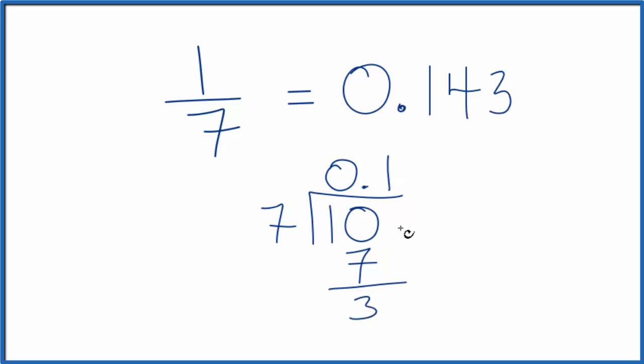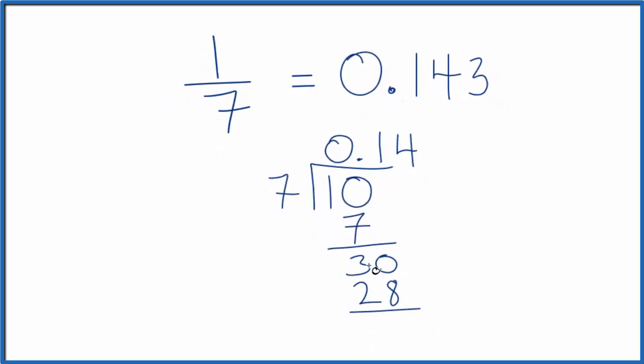So we move over a decimal place, make this 30. 7 goes into 30. 4 times 7, that's 28. 30 minus 28, that's 2.